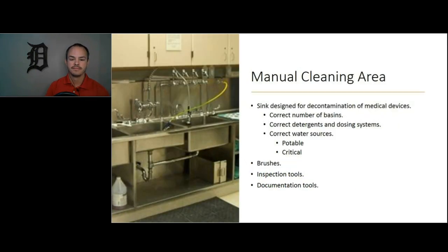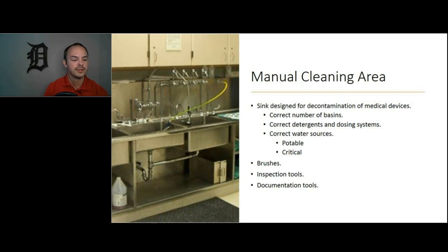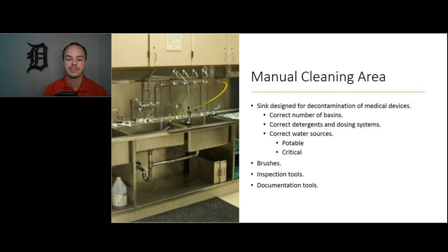Consider the manual cleaning area. Does your sink have the correct number of basins? Does it have the correct detergents and dosing systems? What about the source for critical water? We can't forget about brushes, inspection tools, and other necessary items. Maybe your decontam at an ASC is the size of a closet — that's a problem. You need adequate space to do your decontam duties, the right air exchanges, and the right air pressure. You need all of those things to do it right.